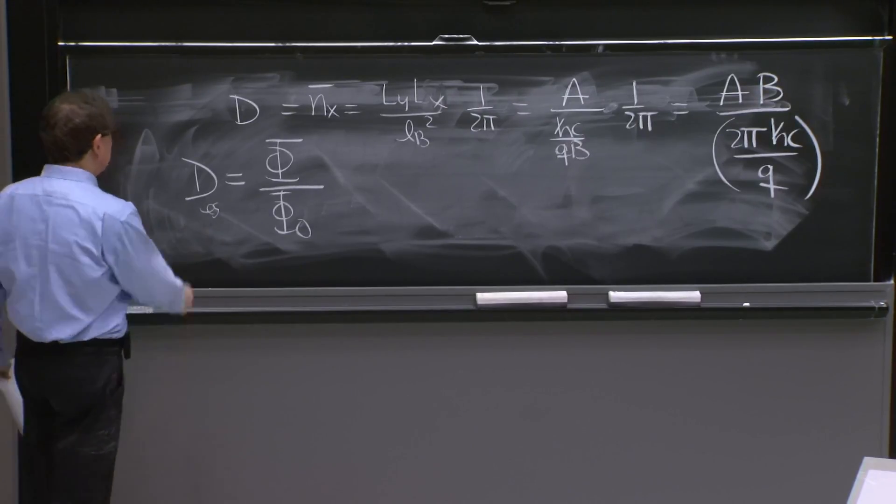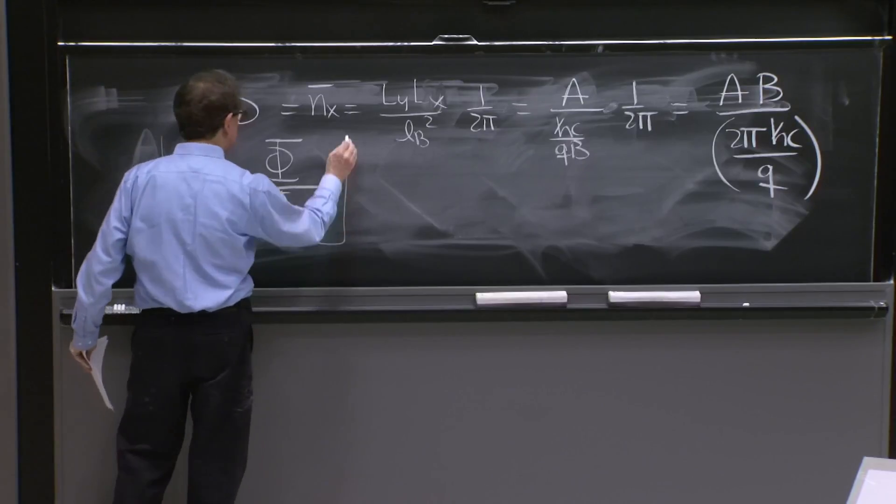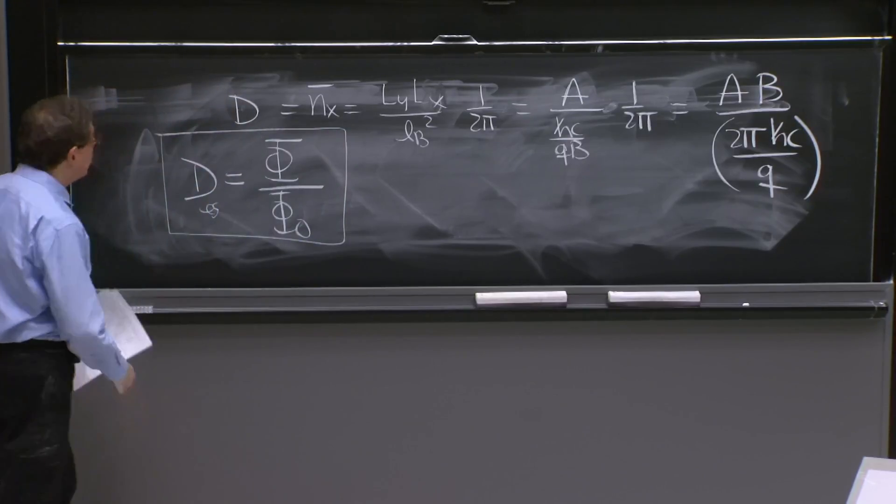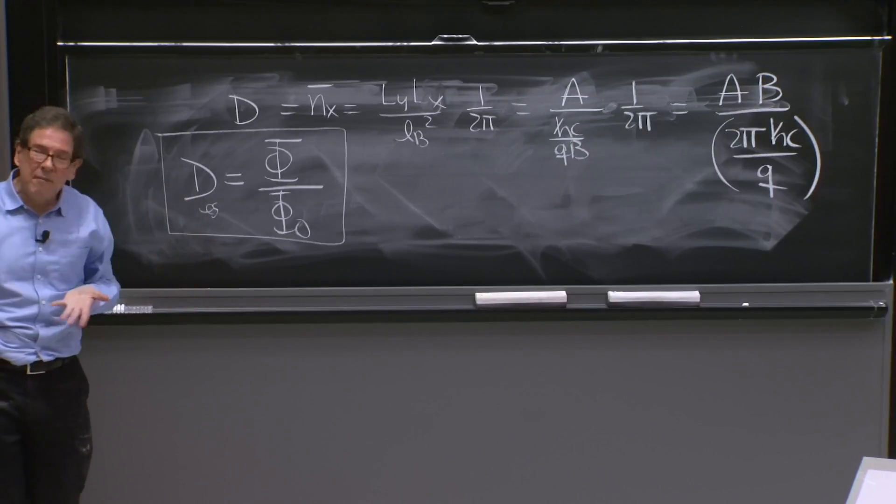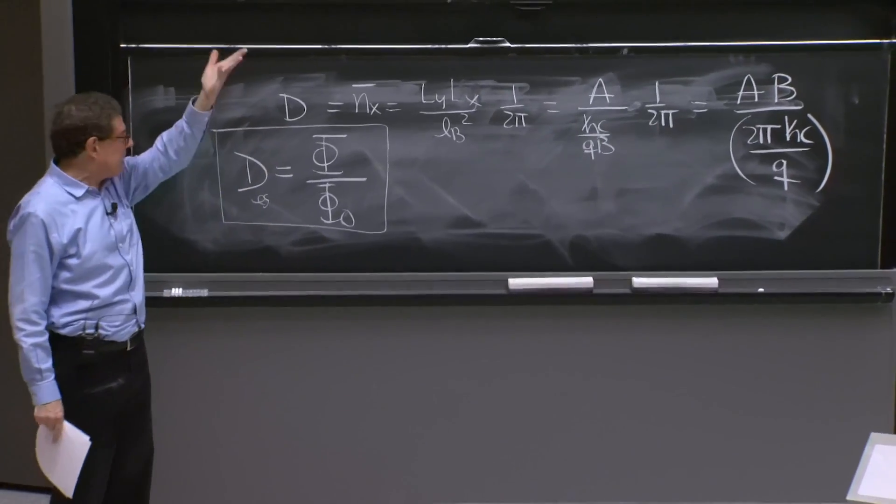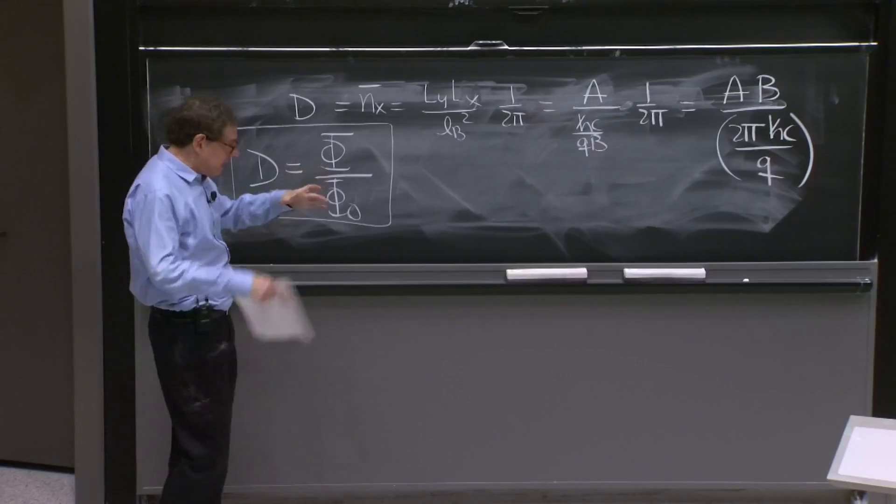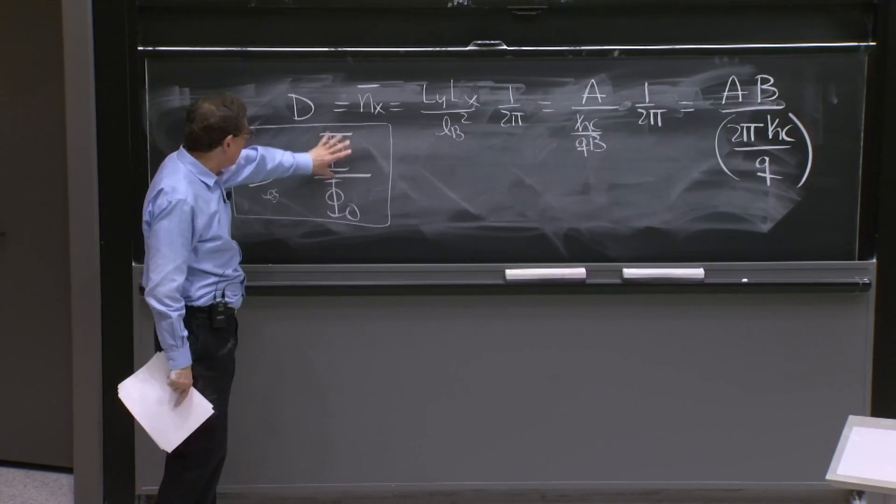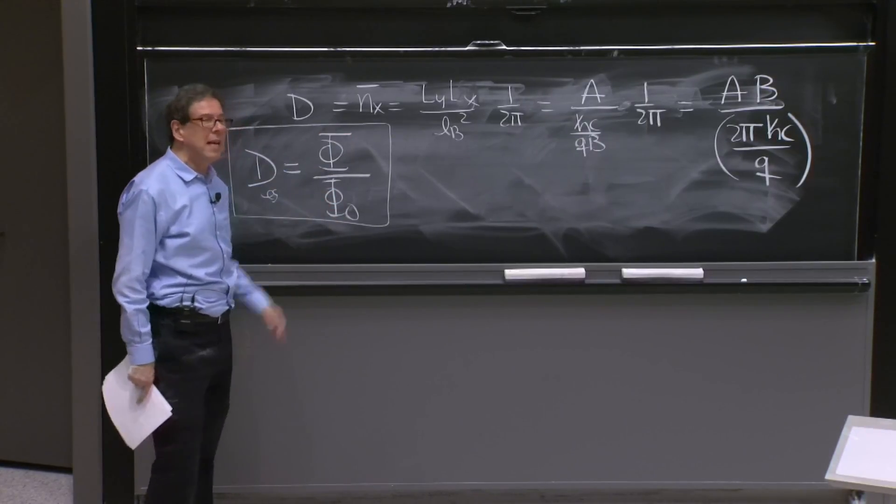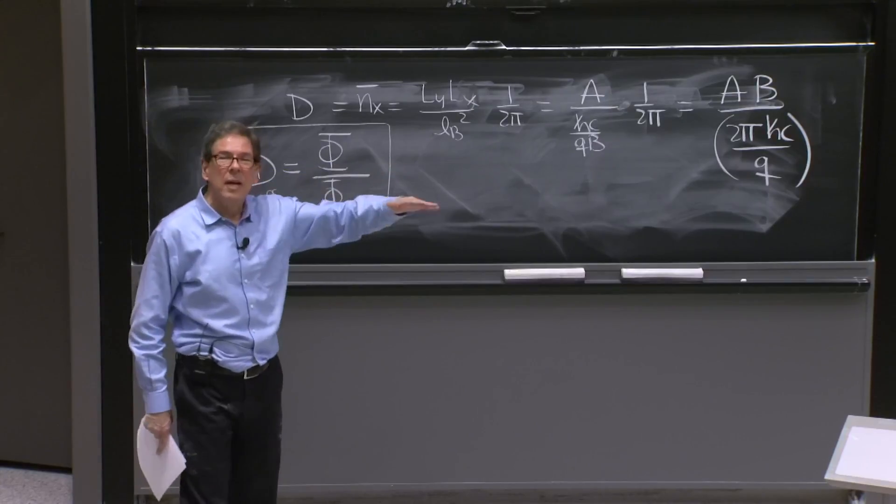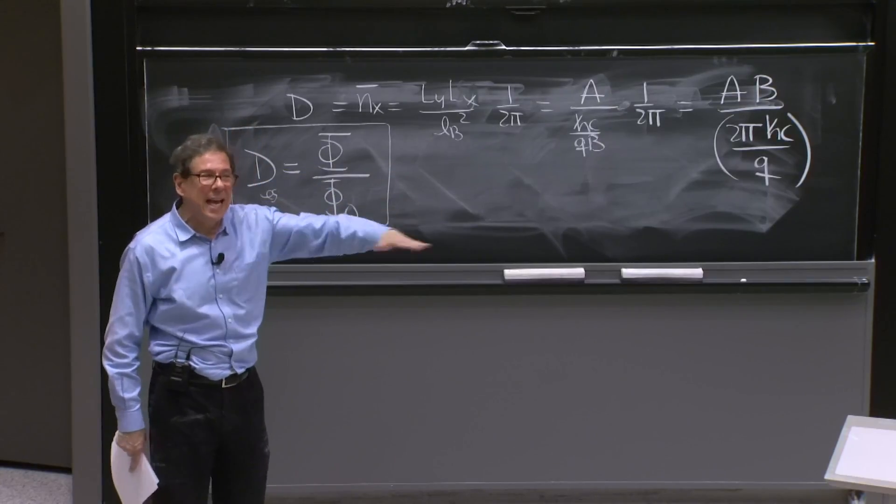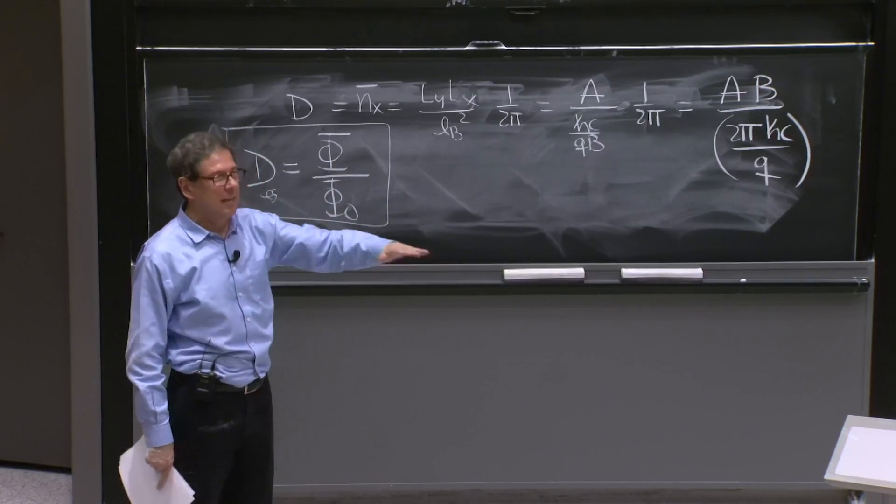So this is how many states you can put on the sample. So you're given a magnetic field, a Tesla. And you have some area. You find the φ. You divide by φ_naught. And that's the number of degenerate states of each Landau level.